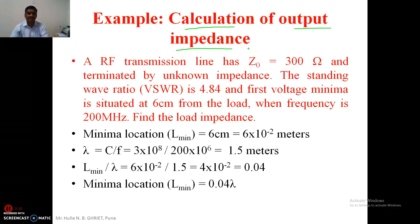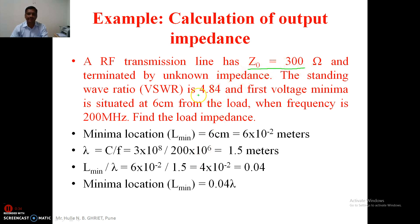The things are again simple. First, we will sort out the given data. The characteristic impedance is given as 300 ohm, and the standing wave ratio is given as 4.84. The voltage minima is situated at 6 centimeters from the load, and frequency is given. The difficulty here is that the distance is given in terms of centimeters, but the Smith chart does not deal with centimeters, meters, or kilometers — it deals with distance in terms of wavelength.